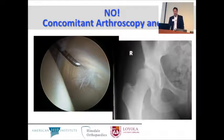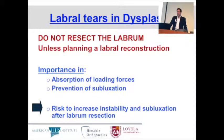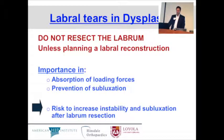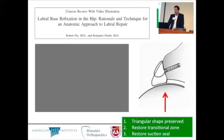With a complementary PAO, we protect the labral repair. If you are treating labral tears in dysplasia arthroscopically, don't resect the labrum unless you're planning a labral reconstruction, because the labrum has a critical importance in absorbing loading forces and preventing subluxation in the dysplastic hip. The load-bearing role of the labrum is as much as 11% of the load in a dysplastic hip. If we resect any part of the labrum, we risk worsening the instability and subluxation. In certain hyperplastic labra, a labral base refixation can be helpful. In others, where there is too much instability of the substance of the labrum, a loop stitch can help stabilize the bulk of the labrum.